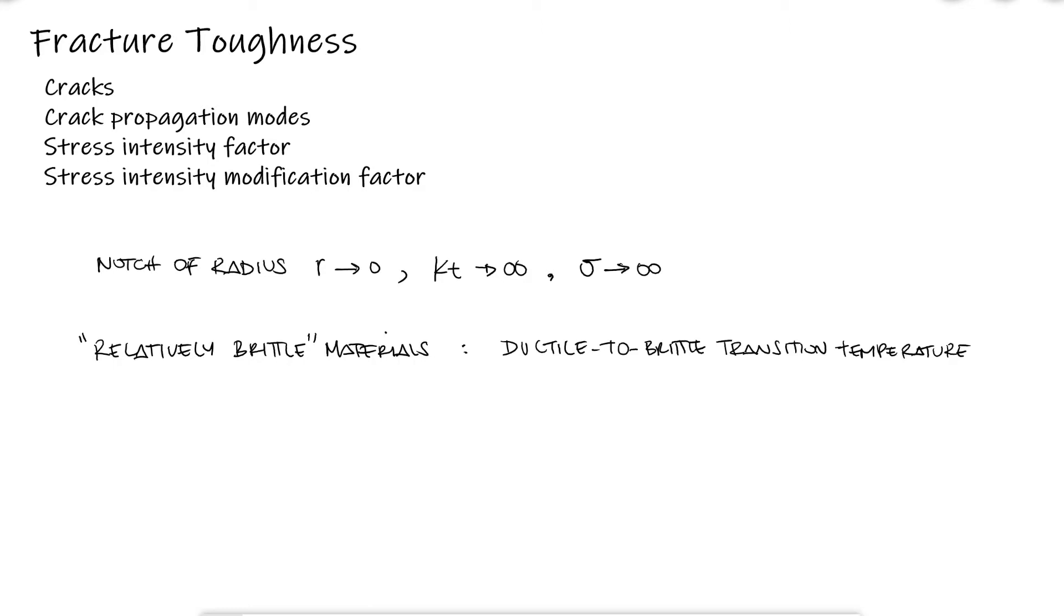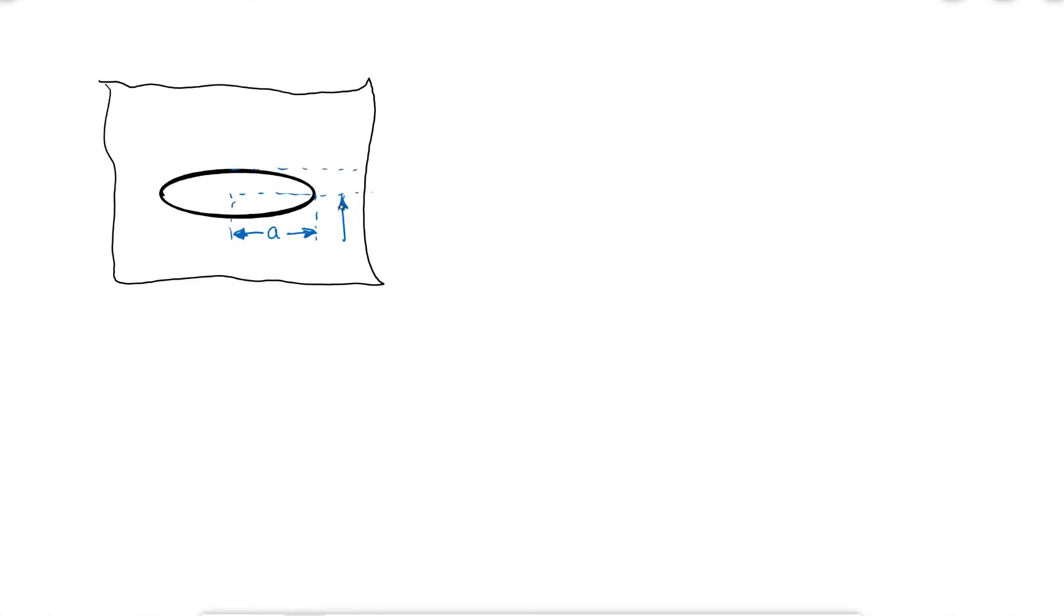One of the earliest fracture mechanics ideas studied stress field calculations for an elliptical flaw. In this case, the maximum sigma y was given by the product of a stress concentration factor and the external stress. But this model was slightly flawed, as again, for a sharp crack, b would approach zero, making sigma max approach infinity.